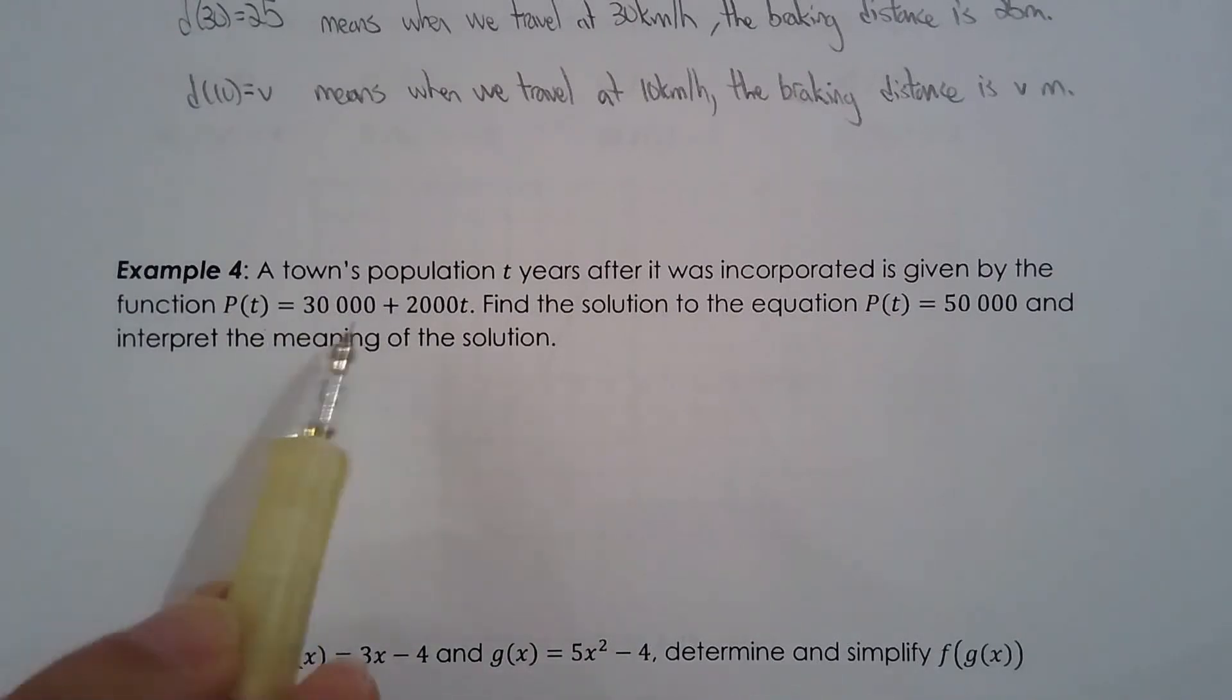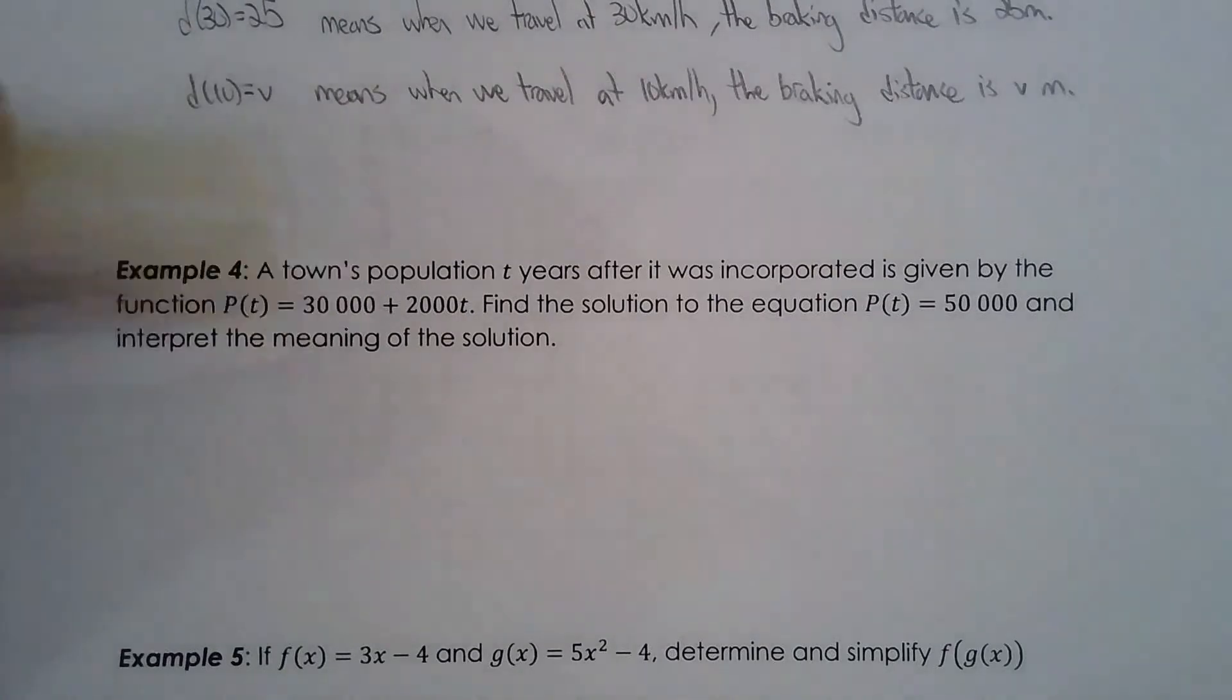You can think of it as the initial value is 30,000, the rate of change is 2,000 people per year, or you can say the y-intercept is 30,000 and the slope is 2,000. Anyways, they want us to solve this equation and interpret the meaning.